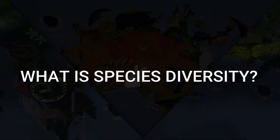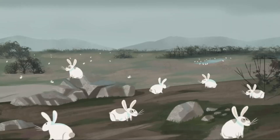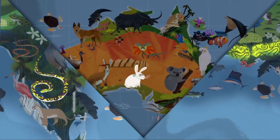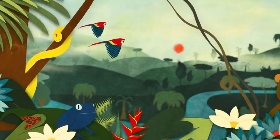Species diversity simply means the number of species and the number of individuals of each species in a specific environment or area. It means the population of a species in a specific community or ecosystem. This diversity greatly contributes to the richness of an ecosystem. The more a single species dominates a community, the lower the richness of the ecosystem. A well-balanced community is more likely to be rich in biodiversity.